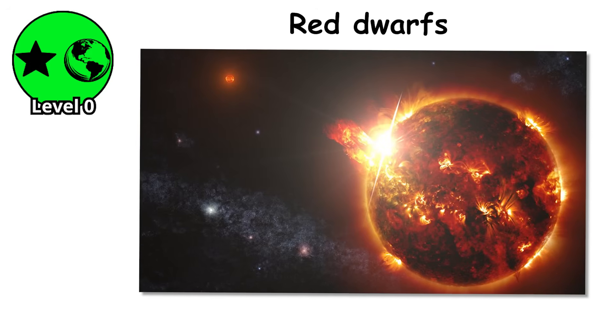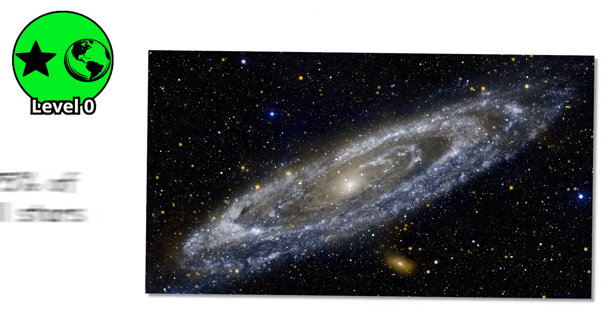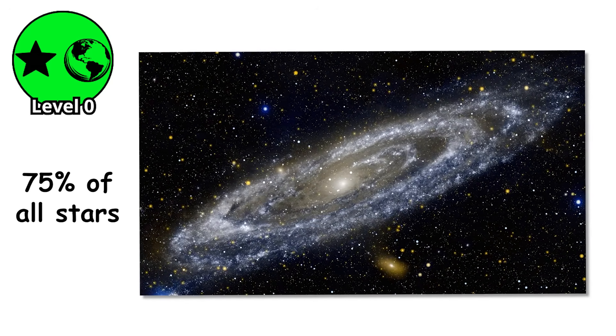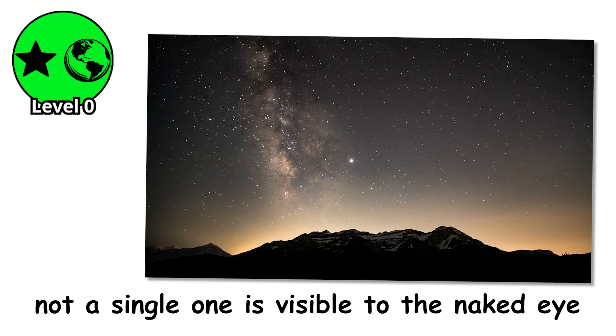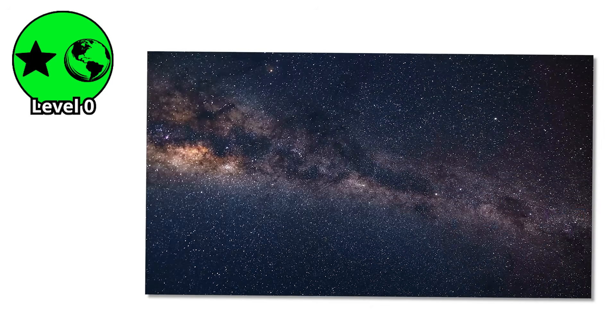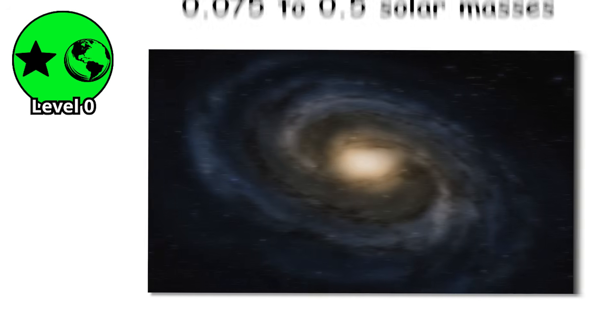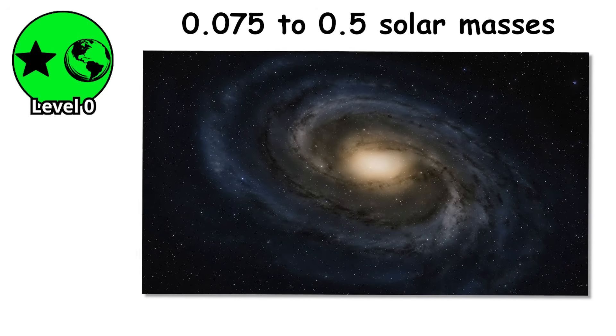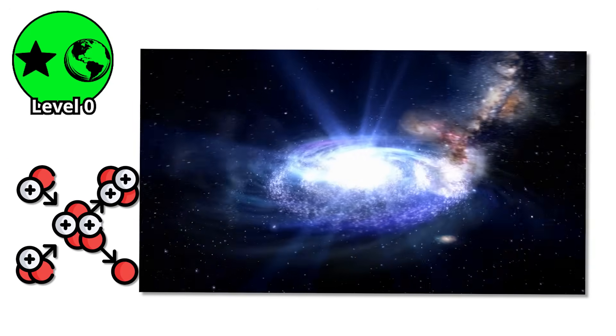Red dwarfs are the most common type of star in existence, making up about 75% of all stars in the Milky Way, yet not a single one is visible to the naked eye from Earth because they're all too dim. These are the smallest true stars, ranging from about 0.075 to 0.5 solar masses, barely large enough to sustain nuclear fusion in their cores.